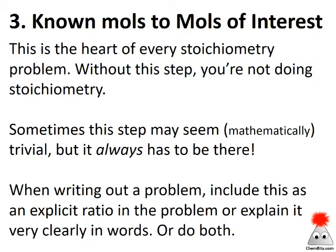Now we get to the heart. The heart of every stoichiometry problem is the mole-to-mole conversion that takes place right in the middle. Unfortunately, this is one that people sometimes skip over because it seems trivial — many reactions have one-to-one relationships between moles of reactants and products, so people tend to skip those. But don't ever skip this step. Writing it out explicitly will help you keep track of problems when they get more complex.